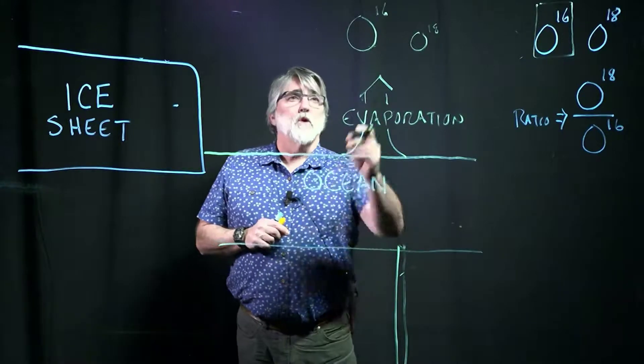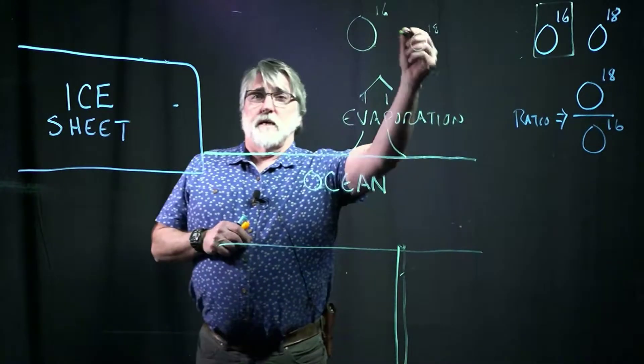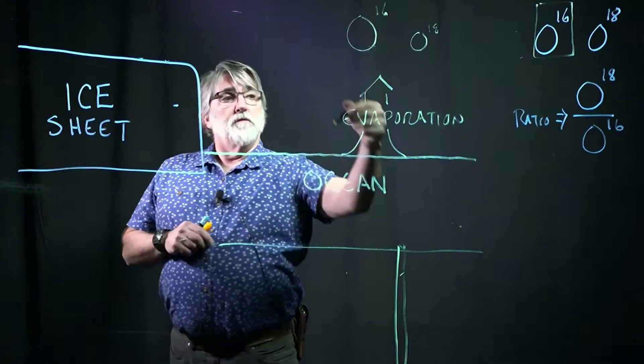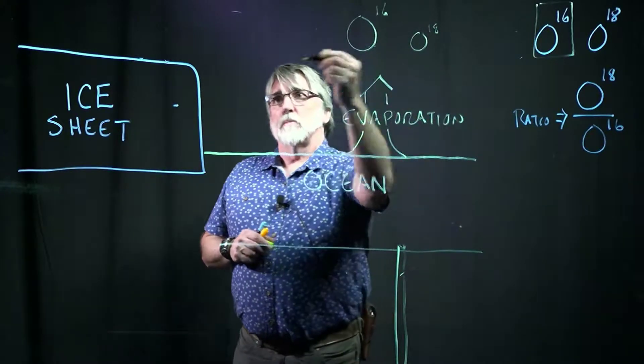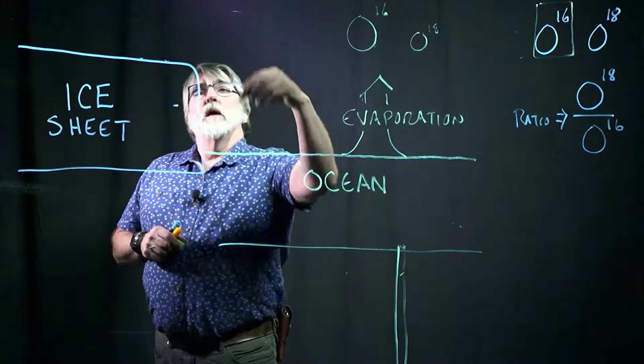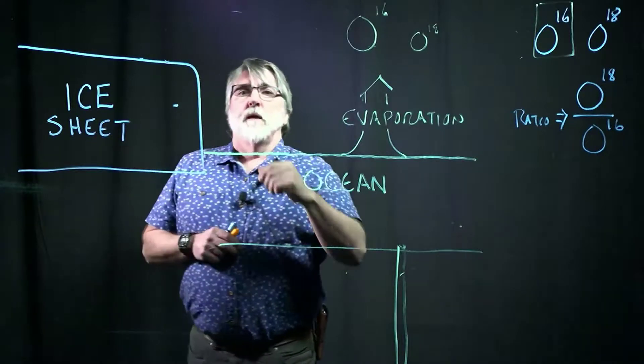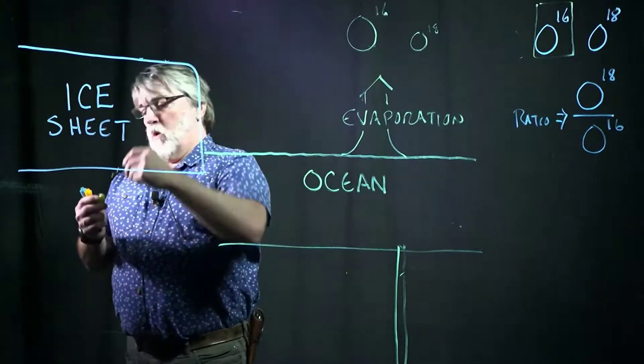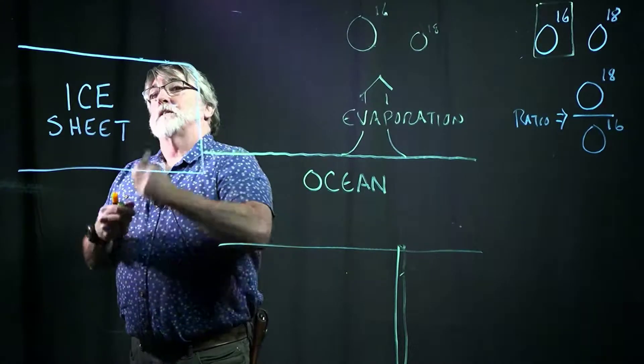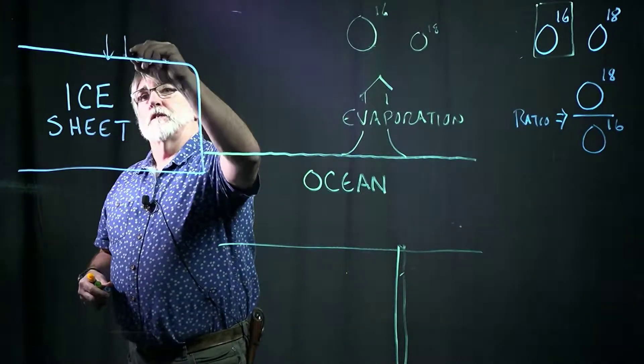So evaporation is going to tend to what we call fractionate O16. It's going to take it up preferentially into the atmosphere. And of course, this oxygen is going to get tied up in water vapor.